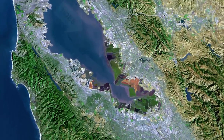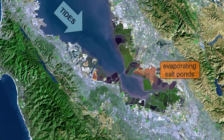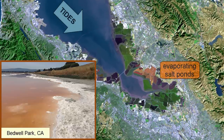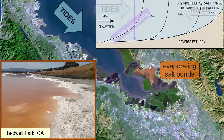However, these colored ponds were developed to increase evaporation and produce a variety of salts. Some of these ponds are still active, others are not. As waters mix around these ponds, salinity actually increases and we have a reverse estuary.